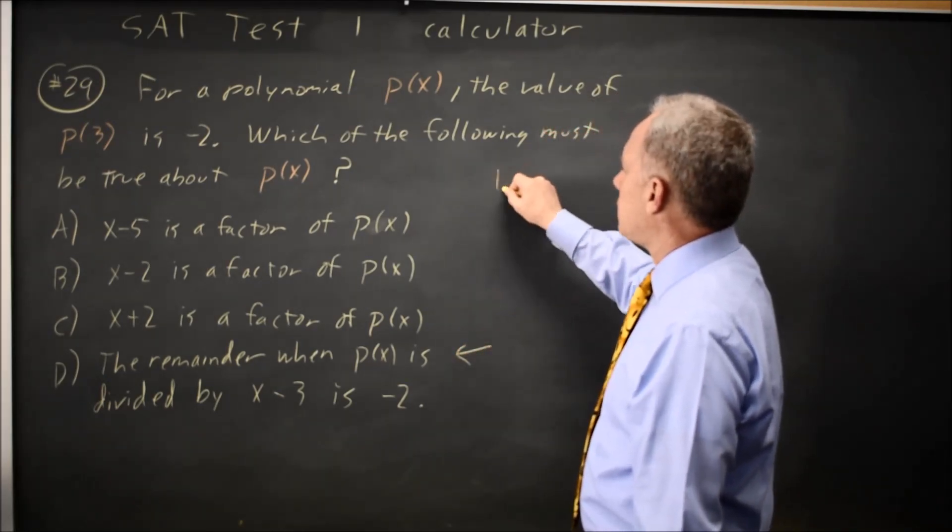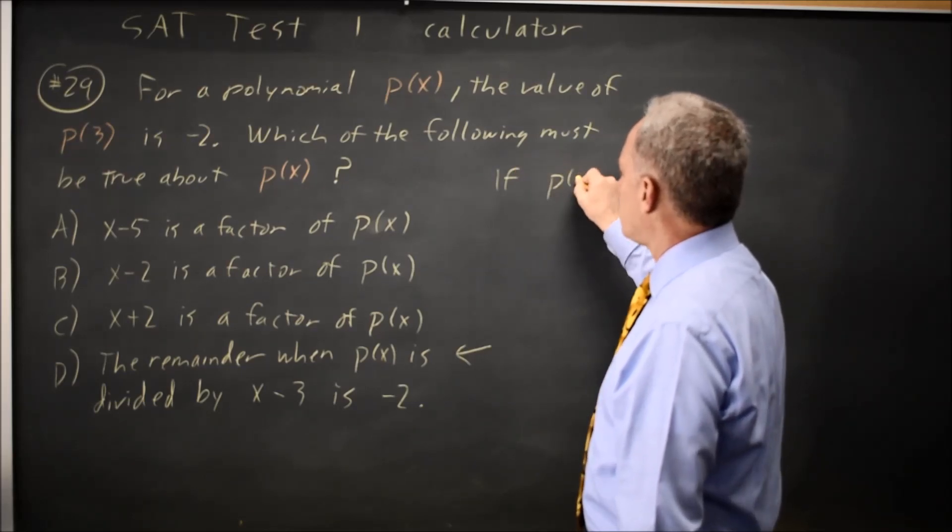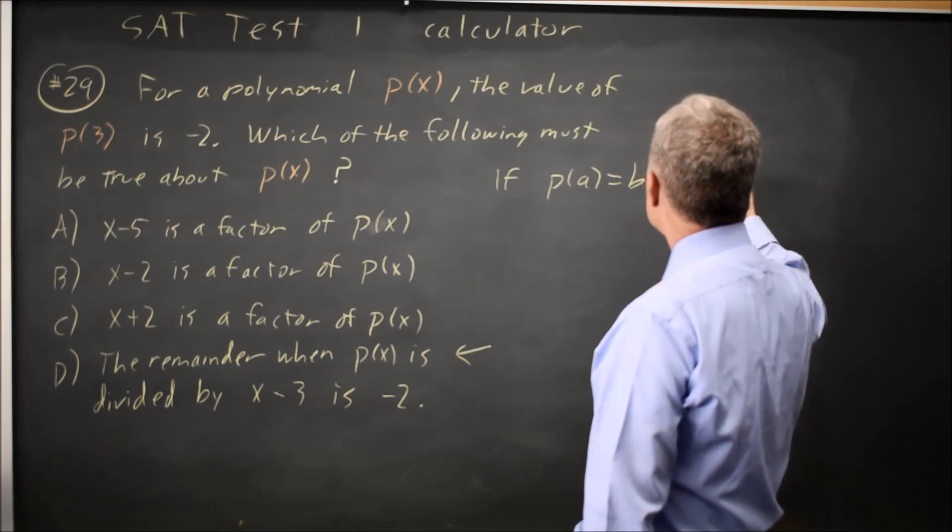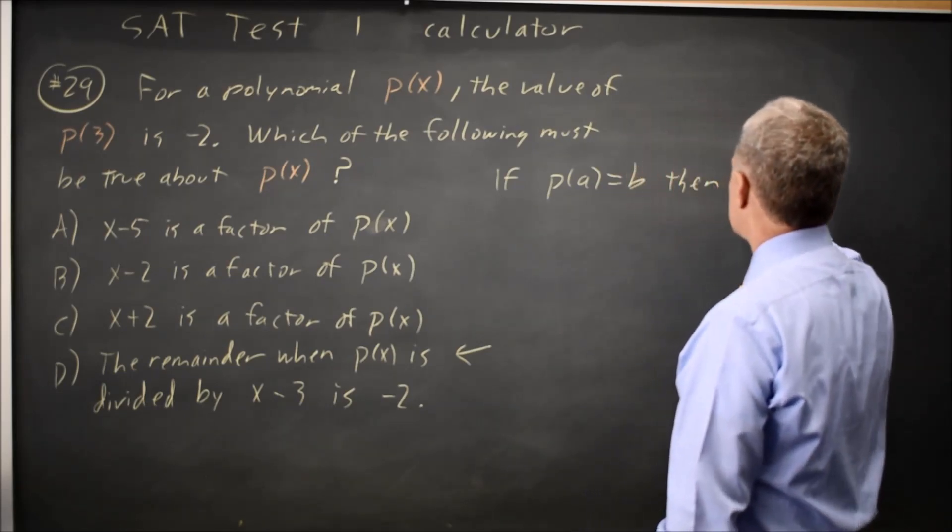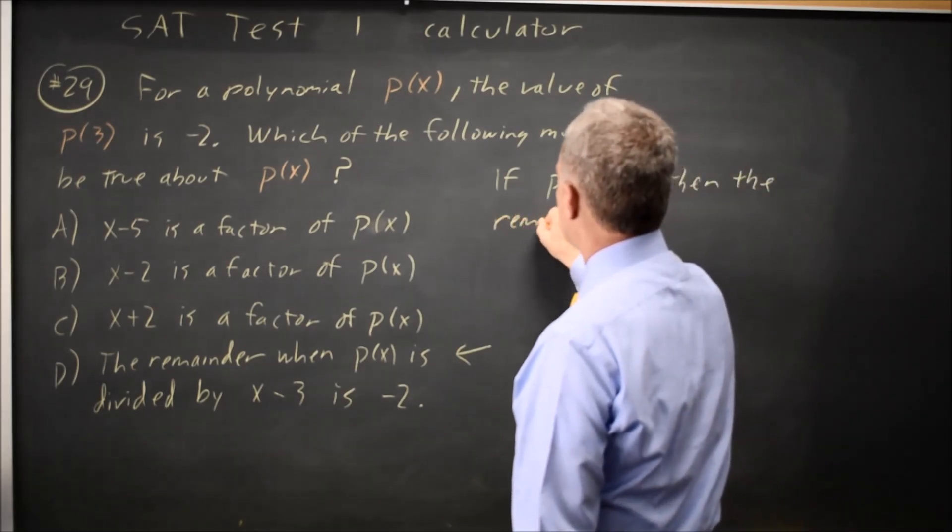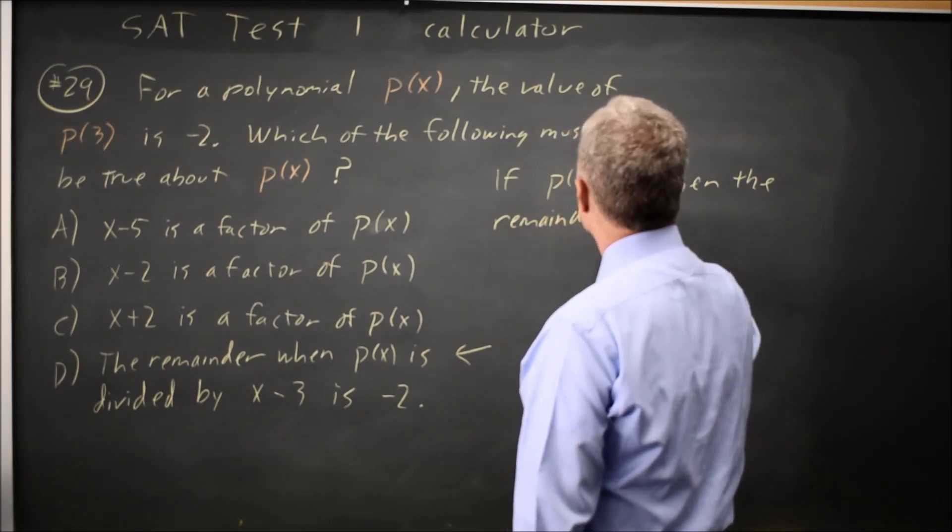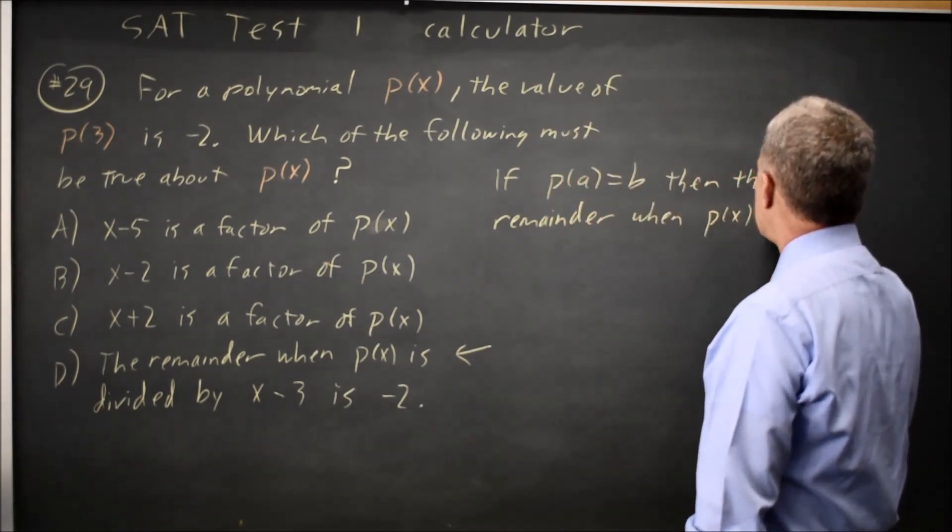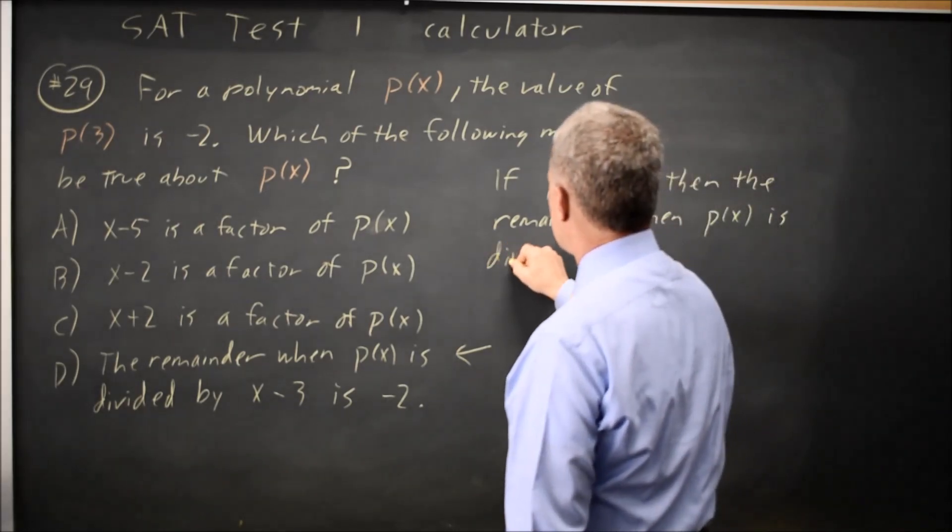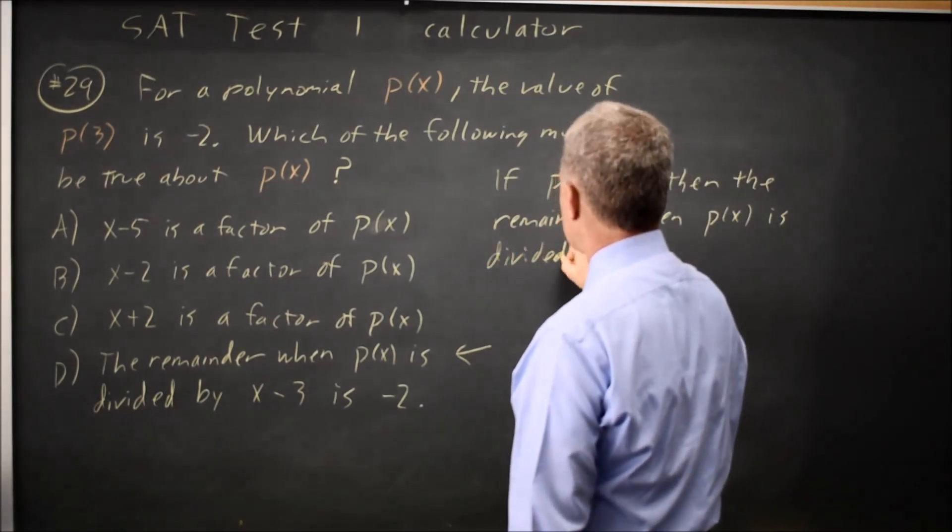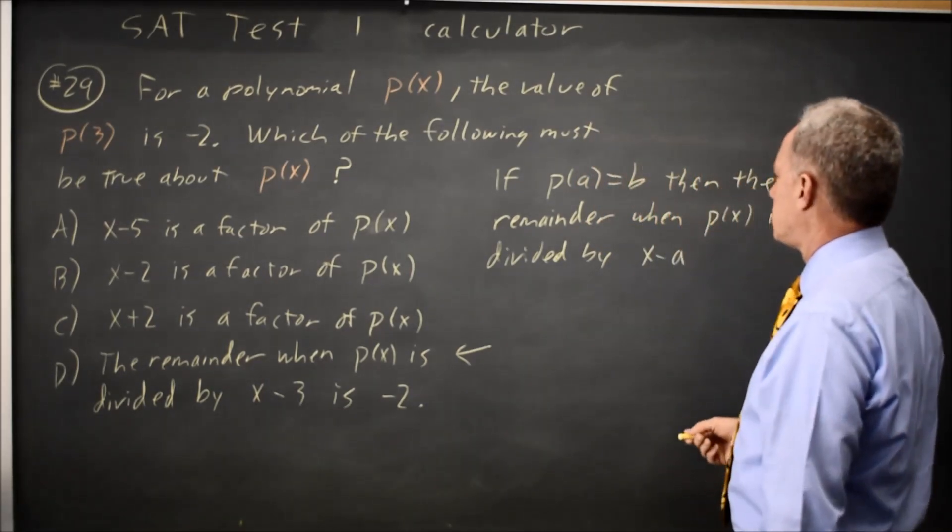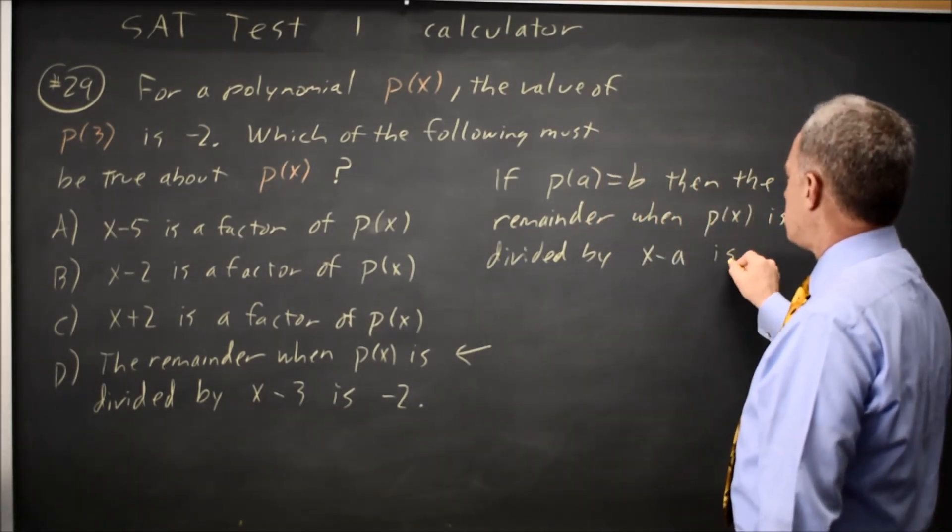And the remainder theorem says if P(A) equals B, then the remainder when P(x) is divided by x minus A is B.